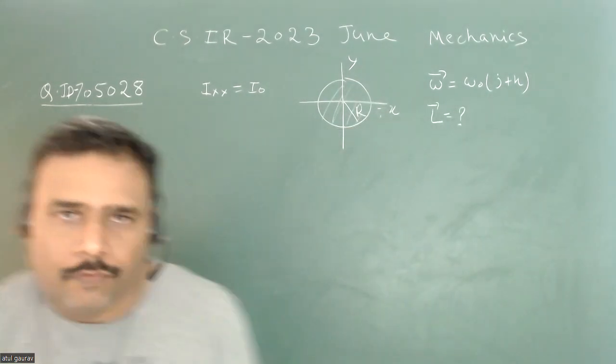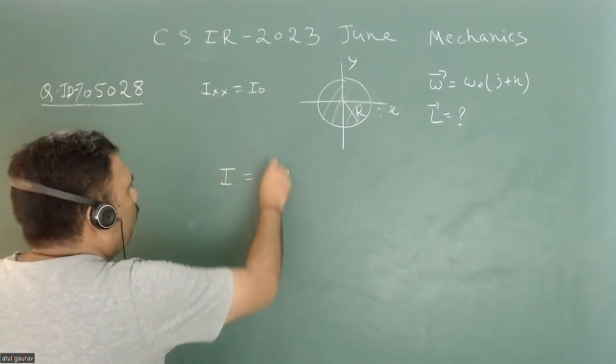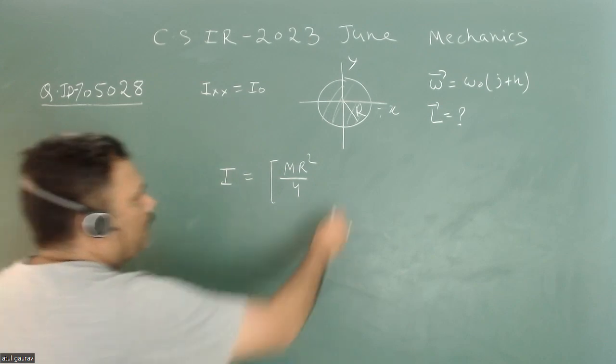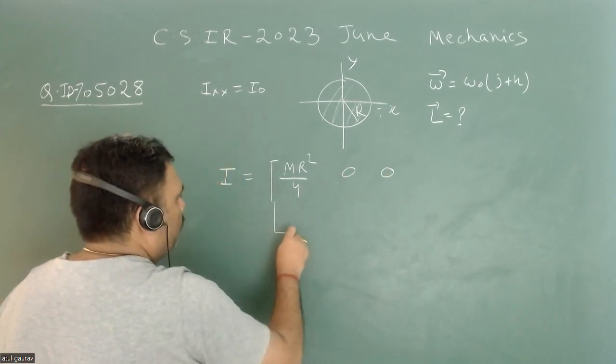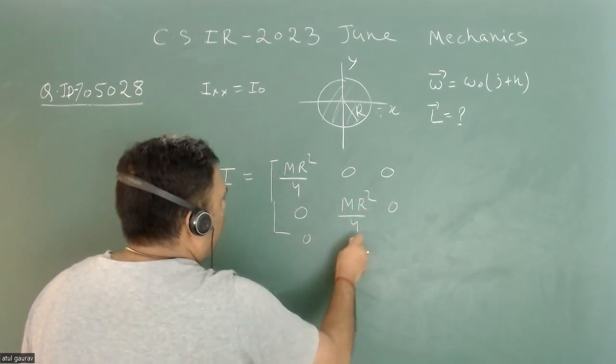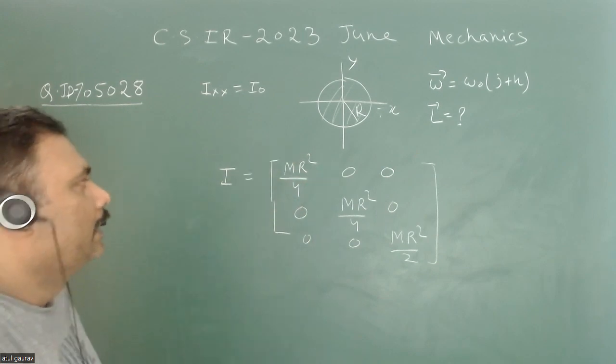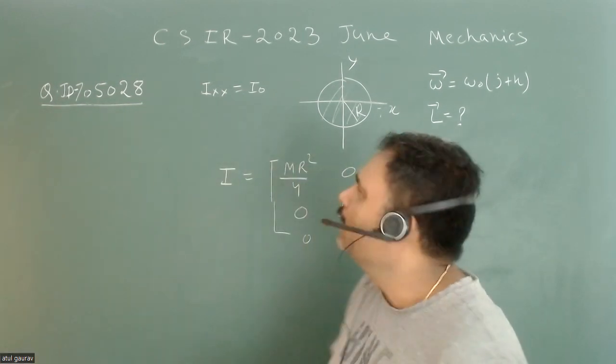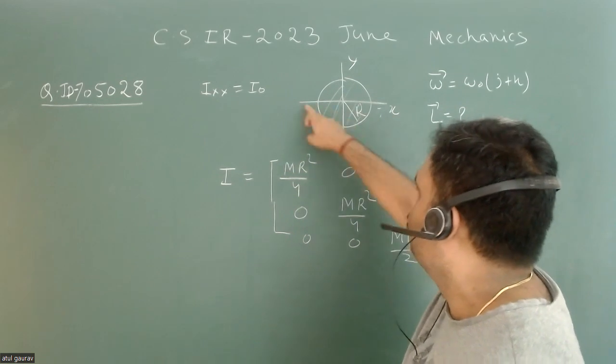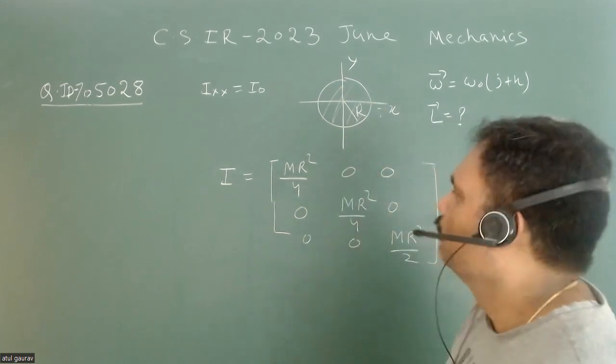When we write this moment of inertia tensor of the disk, fortunately it is diagonal. The tensor is given as MR²/4 along the x-axis, MR²/4 along the y-axis, and MR²/2 about the z-axis. This is the moment of inertia tensor about the principal axes.